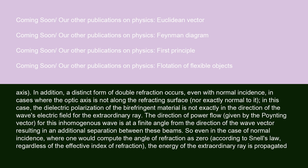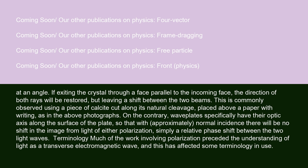A distinct form of double refraction occurs even with normal incidence, in cases where the optic axis is not along the refracting surface nor exactly normal to it. In this case, the dielectric polarization of the birefringent material is not exactly in the direction of the wave's electric field for the extraordinary ray. The direction of power flow, given by the Poynting vector, for this inhomogeneous wave is at a finite angle from the direction of the wave vector, resulting in an additional separation between these beams. So even in the case of normal incidence, where one would compute the angle of refraction as zero according to Snell's law, the energy of the extraordinary ray is propagated at an angle. If exiting the crystal through a face parallel to the incoming face, the direction of both rays will be restored, but leaving a shift between the two beams. This is commonly observed using a piece of calcite cut along its natural cleavage, placed above a paper with writing, as in the above photographs.